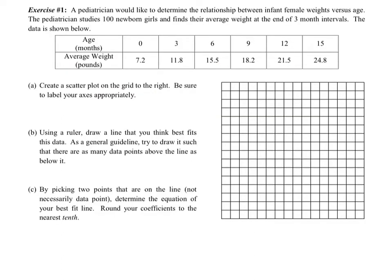Exercise 1. A pediatrician would like to determine the relationship between infant female weights versus age. The pediatrician studies 100 newborn girls and finds their average weight at the end of 3-month intervals. The data is shown in the table. So just take note, we have age in months versus average weight. So when an infant baby female is 0 months old, they average 7.2 pounds. When that infant female is 3 months old, they average 11.8 pounds. And again, you can continue to read on.